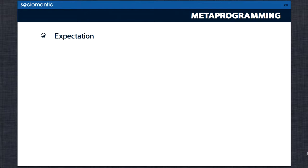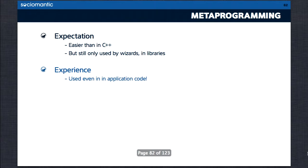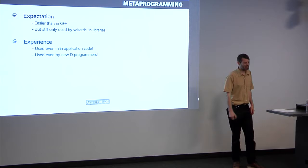The second of my six wrong areas was metaprogramming. I had very clear expectations — I thought it would be better than C++, but still arcane. In C++, templates are cryptic and geeky. I expected Sociomantic might have one or two library guys with lots of C++ experience who might do this on rare cases where it's necessary, but certainly nobody normal would be using it.